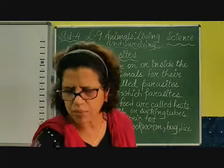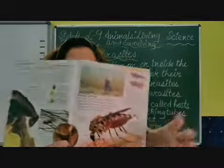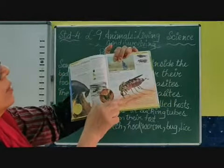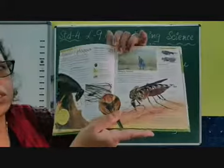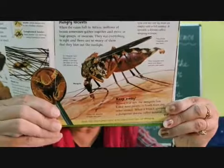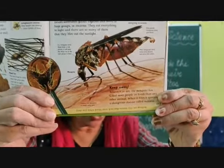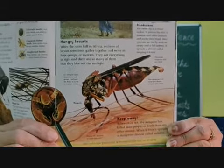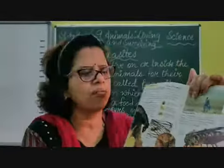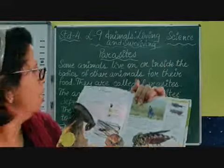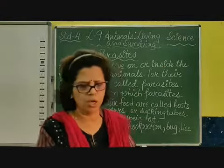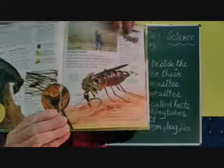You must have seen mosquitoes — they suck blood from us. I will show you a picture of a mosquito so you can see how they suck blood. This is their sucking tube. The mosquito's mouth is suited to suck blood from the bodies of other animals. They have a tube-like structure which helps them suck blood from the host.